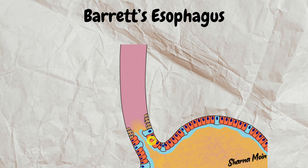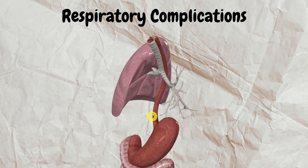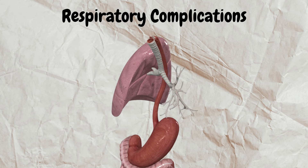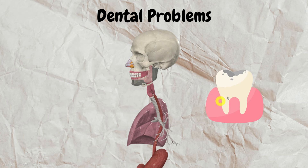Then we have respiratory complications. Sometimes acid refluxed through the esophagus can enter the larynx and the respiratory system, causing laryngitis, hoarseness of the voice, bronchial and lung inflammation, asthma, chest congestion, chronic cough, and aspiration pneumonia. GERD can also affect your teeth — chronic exposure to acid can erode tooth enamel and may cause tooth decay. These are the most common complications.